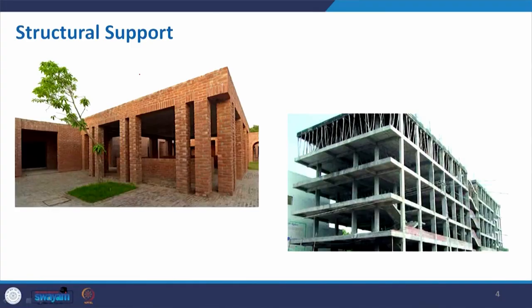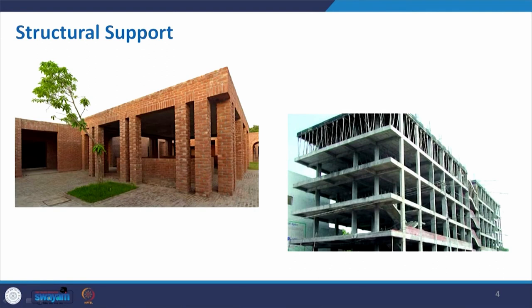Here I have two different pictures side by side. One is a very low-height structure made of brick masonry — you cannot see any concrete column; it is fully made of brick. This is one kind of support. The other is a multi-storey building under construction, showing only the beam, column, and slab. Depending on our design, the span, and the imposed load, it determines the size of the structure, the material, and the kind of support to be given.